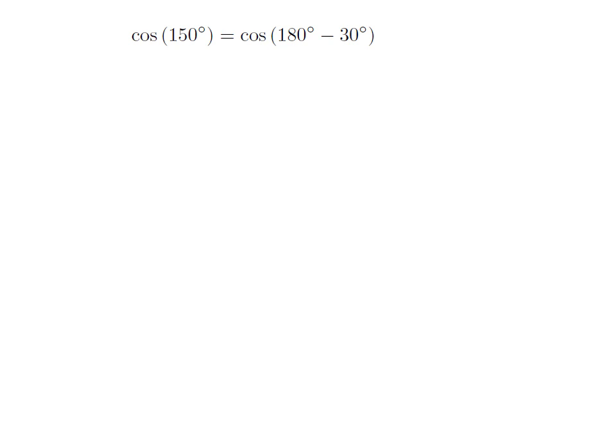As 150 degree is equal to 180 degree minus 30 degree, so cosine of 150 degree is equal to cosine of 180 degree minus 30 degree.